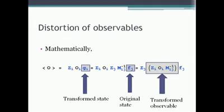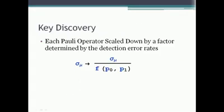Our key discovery is that for each Pauli operator, the transformation by the detection error is just a scaling transformation by a factor F, which is determined by the detector's error rates P0 and P1.